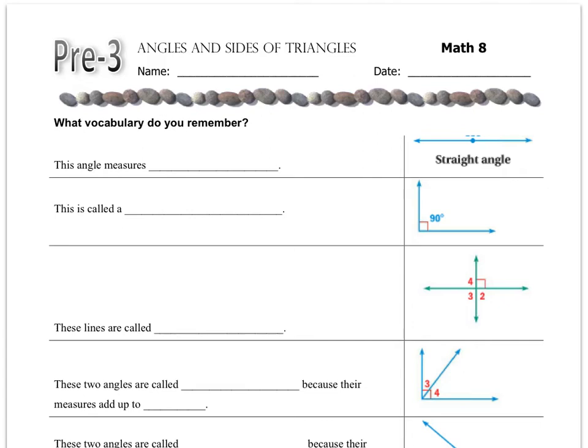Before we start chapter 3, I need to make sure that you have a certain set of vocabulary words already in your knowledge bank. So what I'm going to ask you to do is go through the worksheet, both sides, and see what blanks you can fill in.